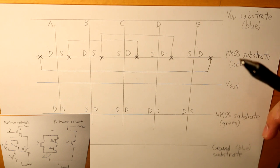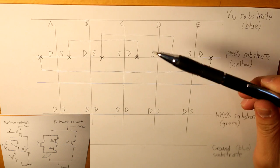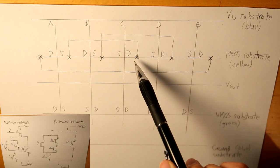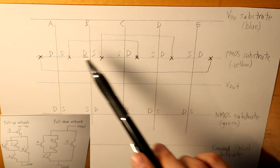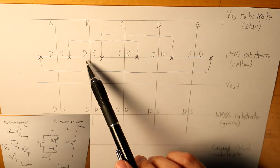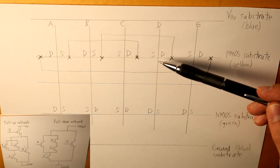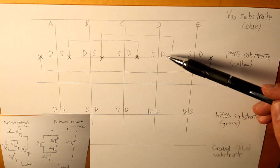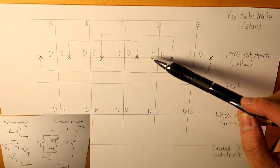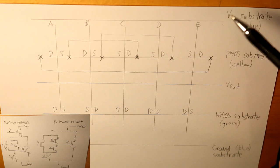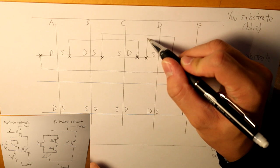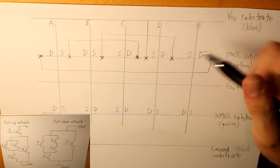For C: the source of C is connected to the source of B already, and also connected to the drain of D, which is also already connected. The drain of C is already connected to the drain of B and to the source of A. For D: the drain is already connected to the source of B and source of C. The source of D has to be connected to the VDD substrate, so we draw a cross and connect it to VDD — that is the only passageway to VDD.